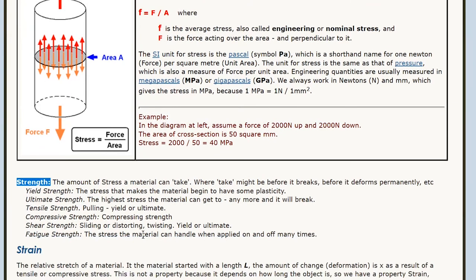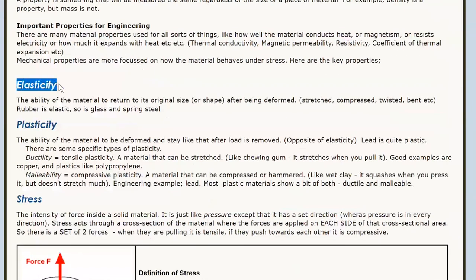We have a bunch of different types of strength for materials. The most commonly referred to is the ultimate tensile strength, also known as UTS — how much stress can the material handle before it breaks? There's another important one called the yield strength: how much stress can it handle before it starts going permanently deformed? Metals start out elastic, and then you go too far, they become plastic.